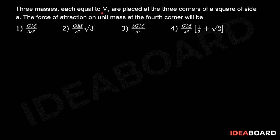Three masses each equal to M are placed at the three corners of a square of side A. The force of attraction on unit mass at the fourth corner will be dash.